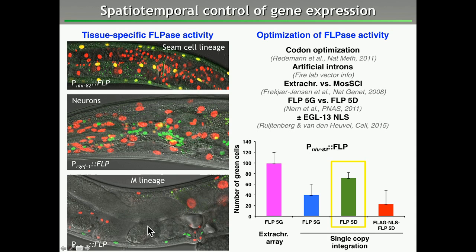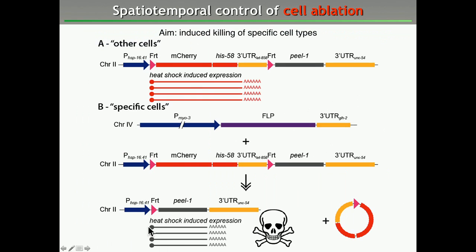This toolkit can be used for more than just DAM-ID. We have cloned a PEEL-1 toxin into the construct instead of the DAM fusion protein. By combining this construct with a flipase expressed in a specific tissue, we can at a given time point induce expression in specific cells and thereby potentially ablate those cells for functional analysis.